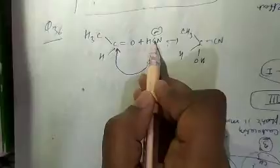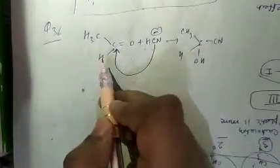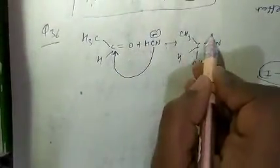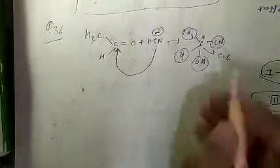In question number 36, the compound CH3-C(=O)-H reacts with HCN to give CH3-CH(CN)-OH. The first statement is that addition takes place at the carbonyl carbon — correct, because CN⁻ attacks at the carbonyl carbon. Addition is regioselective — also correct, as CN⁻ addition is possible only at this carbon. After the product is formed, four different groups are attached, making it a chiral carbon, producing a racemic mixture.